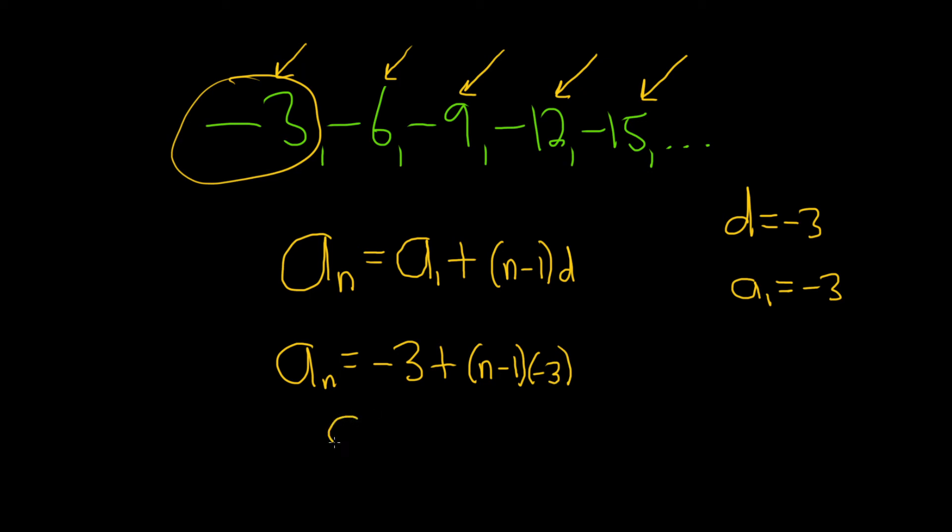So now we can clean this up. a sub n is equal to negative 3. Let's go ahead and distribute this negative 3. That'll give us negative 3 times n, so negative 3n.